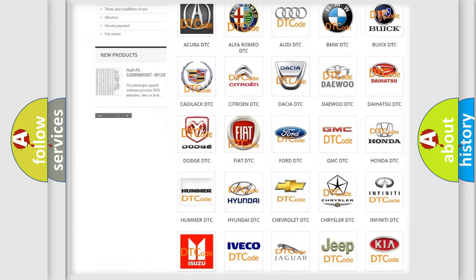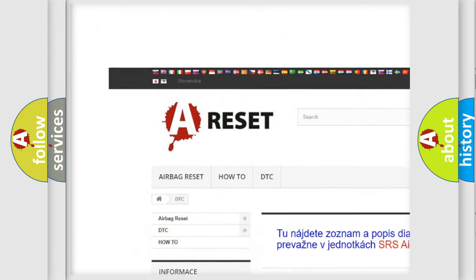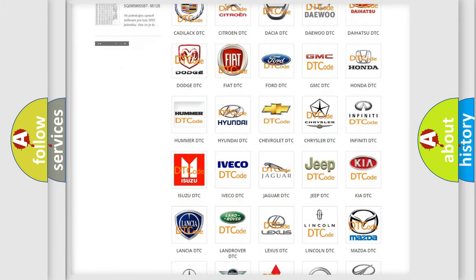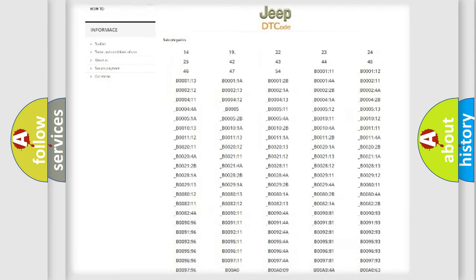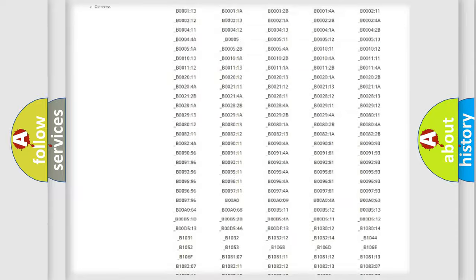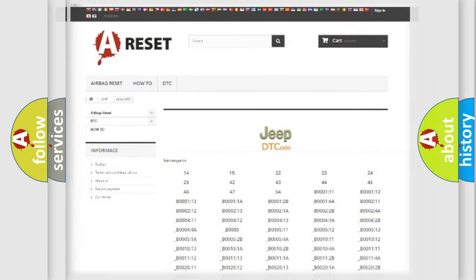Our website airbagreset.sk produces useful videos for you. You do not have to go through the OBD2 protocol anymore to know how to troubleshoot any car breakdown. You will find all the diagnostic codes that can be diagnosed in Jeep vehicles, and also many other useful things.